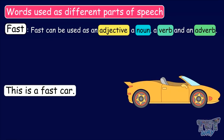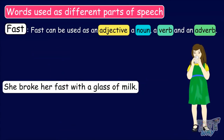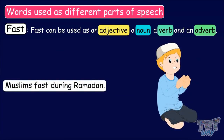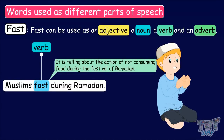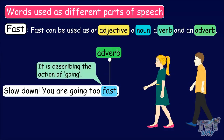This is a fast car. Here, the word fast is an adjective, as it is describing the noun car. She broke her fast with a glass of milk. Here, the word fast is used as a noun, as it is a naming word for a period in which a person doesn't consume food. Muslims fast during Ramadan. Here, the word fast is used as a verb, as it is telling about an action of not consuming food during the festival of Ramadan. Slow down — you are going too fast. Here, the word fast is used as an adverb, as it is describing the action of going.